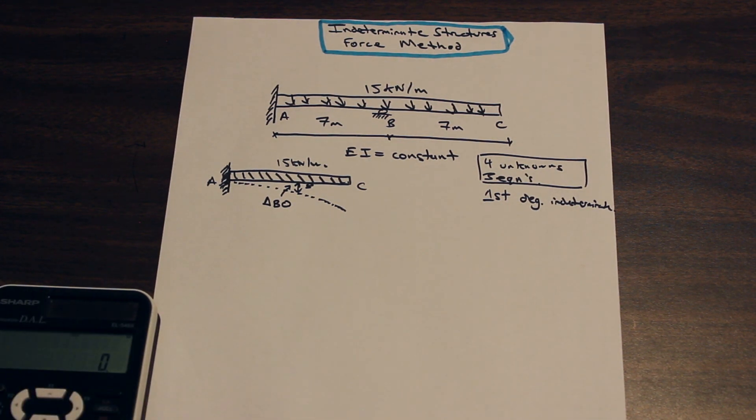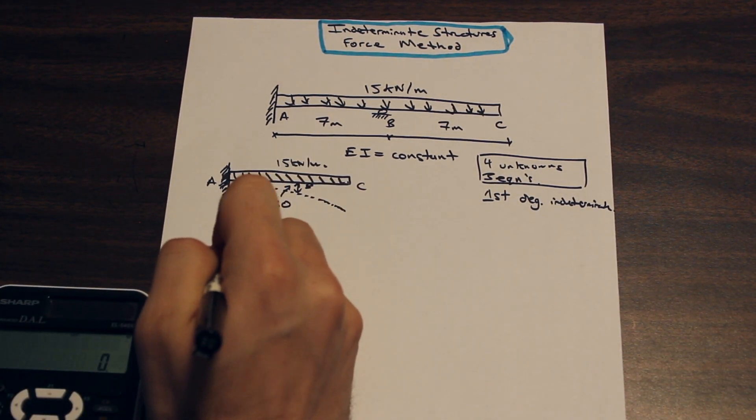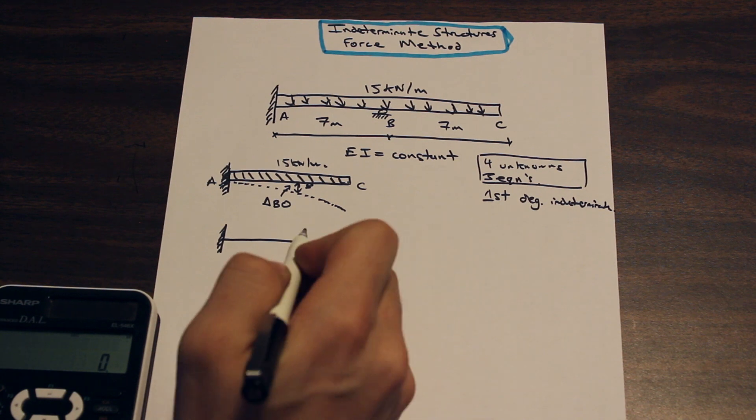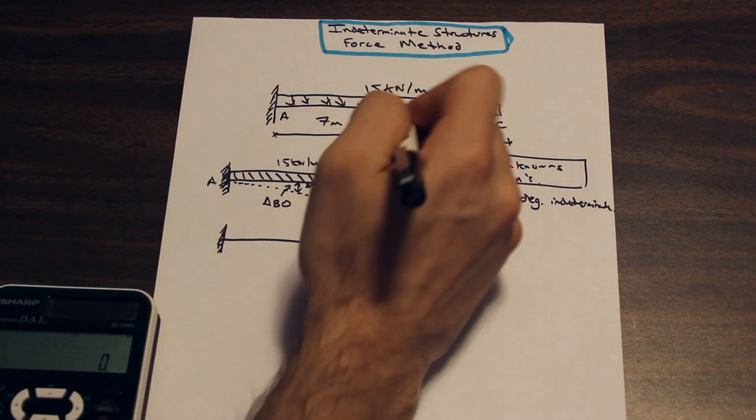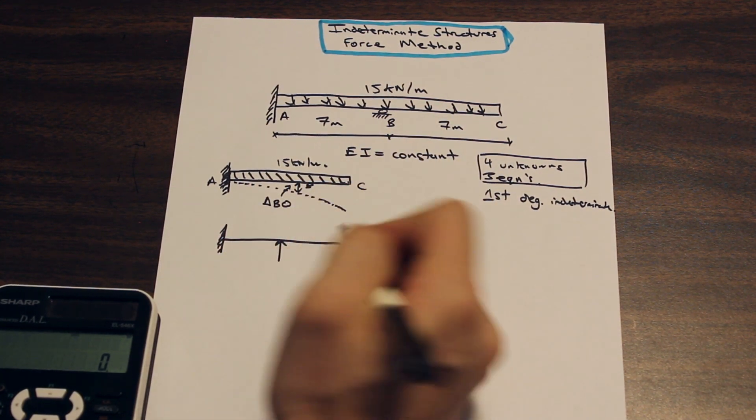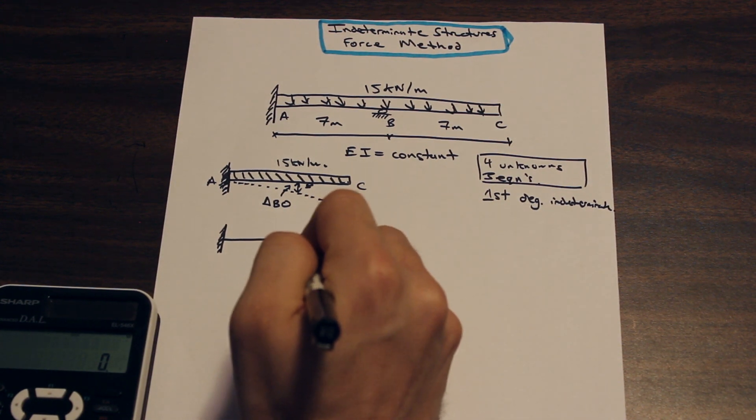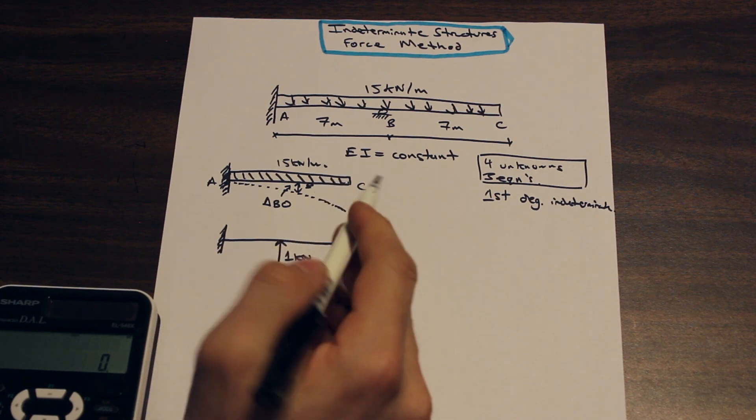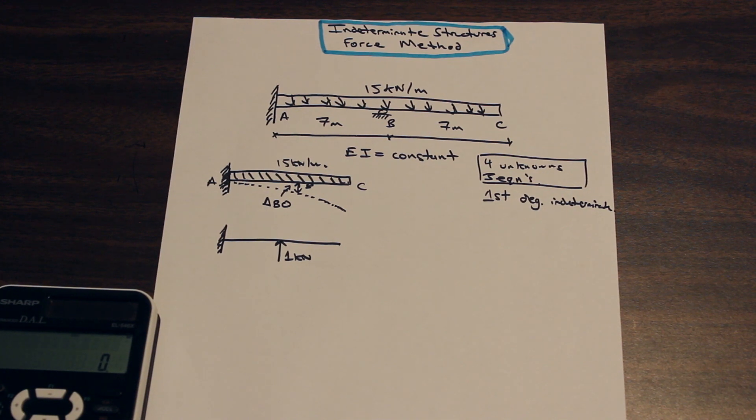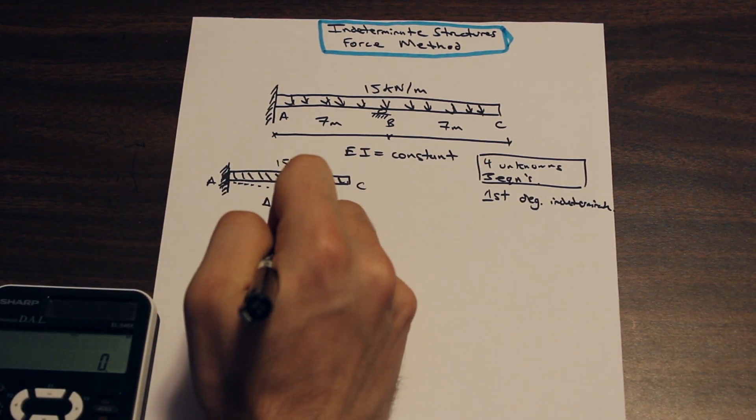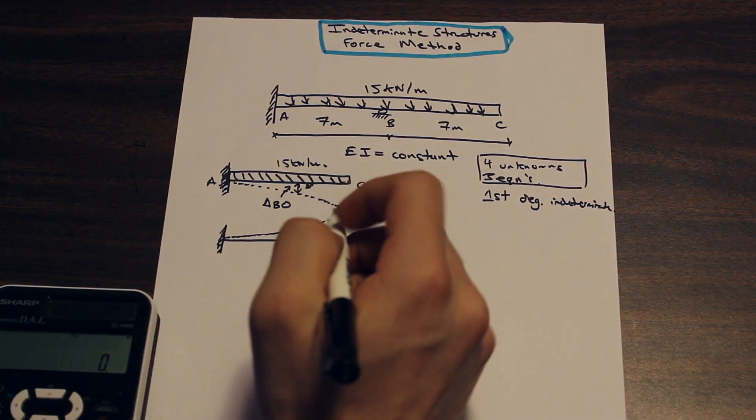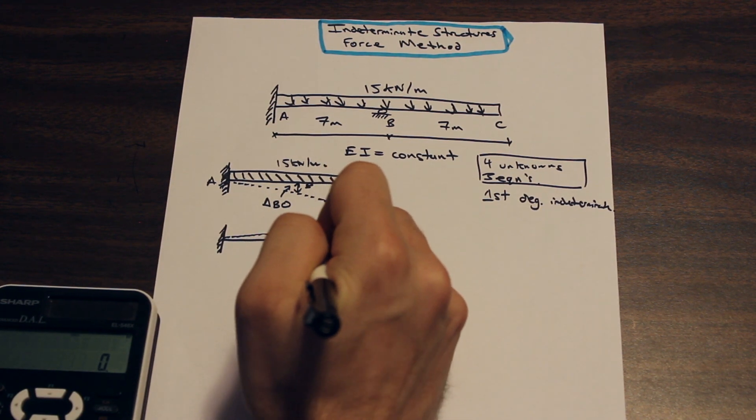So now we need to draw a second system here, where we remove the load that's acting on the beam. And we replace that load with a... So we replace the reaction that would be here, which would be upwards with a one kilonewton unit load. And so we remove the loading and the external loading and we replace the redundant force with a one kilonewton force. So that's what we've done here. And then we're going to go ahead and always make sure you draw the elastic curve. It really does give you a good visual representation of what's going on in the question.